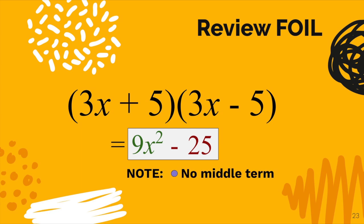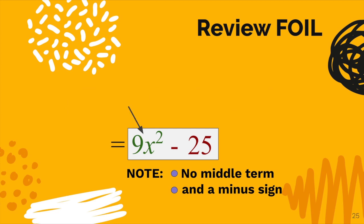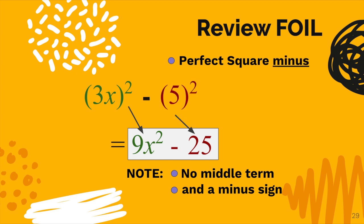Now I want you to notice that it has no middle term. It also has a minus sign. And 9x squared turns out to be what's called a perfect square. It's 3x times itself. And the same thing goes with the 25. It is 5 times itself or 5 squared. So we have two perfect squares being subtracted in this case.